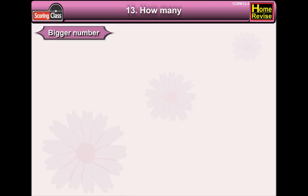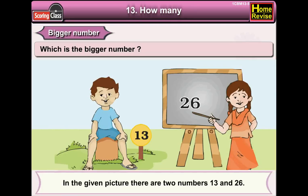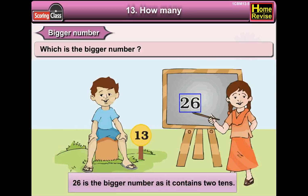Bigger number. Which is the bigger number? In the given picture, there are two numbers, 13 and 26. Now, if you notice them, 26 is the bigger number as it contains two tens.